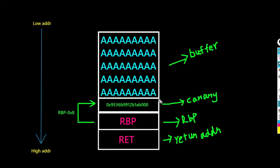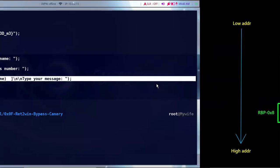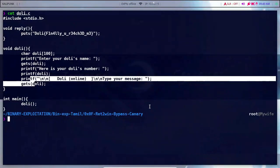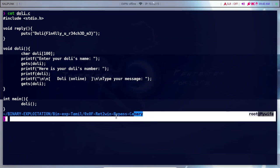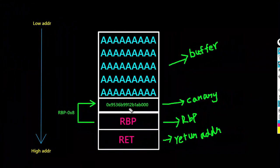There is a buffer here, and you can see the canary value. Then there is RBP and there is a return address. We will use the gets() function. Now we will check the canary value.